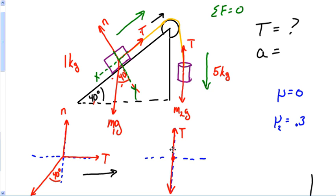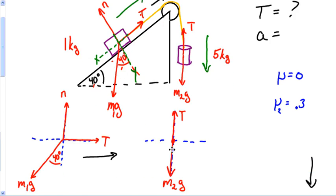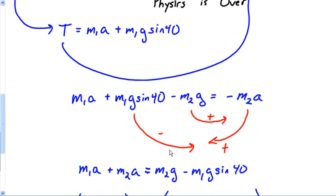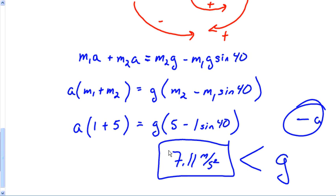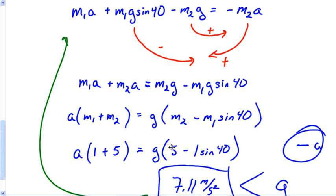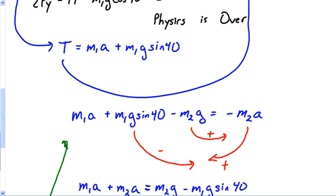Now I'm going to go back to this original problem. By the way, if you wanted tension, tension would be easy to find. All we do is go back. Where is it? Where is my T equals? All the way up here. And I would plug in 7.11 for A, and I could find my tension in there.